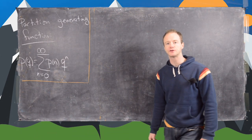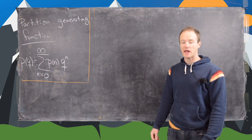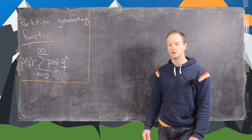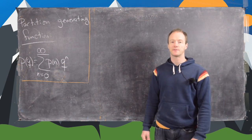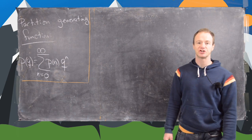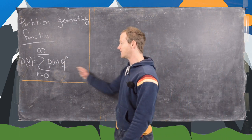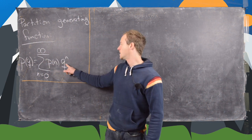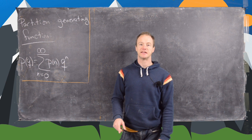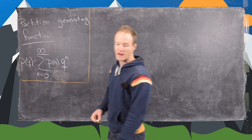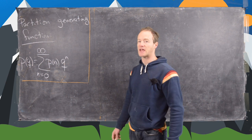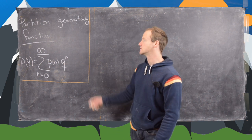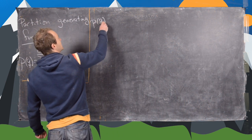Since that closed formula is not really usable, we want to look at something that is useful: the partition generating function. It's defined as an infinite sum using Q as the variable: P(Q) = Σ_{n=0}^{∞} p(n) Q^n, where p(n) is the number of partitions of n.